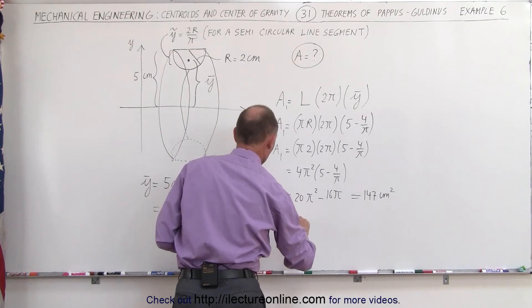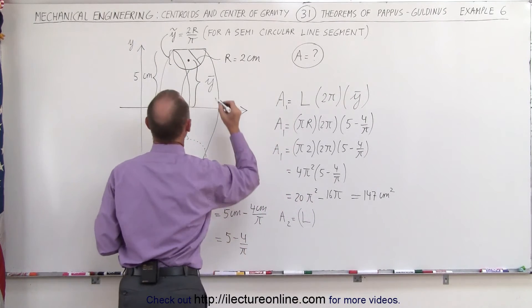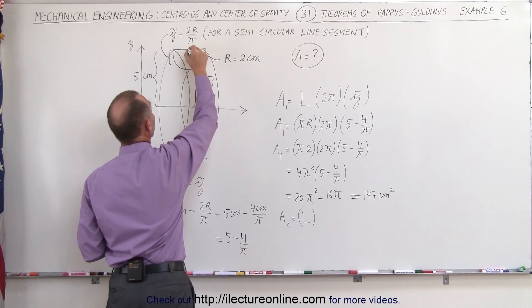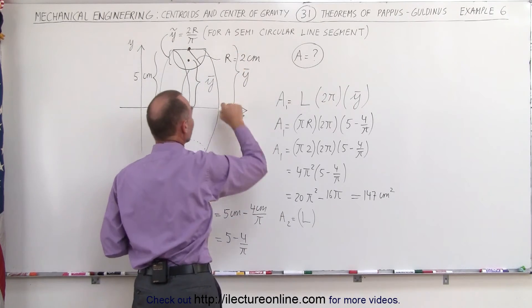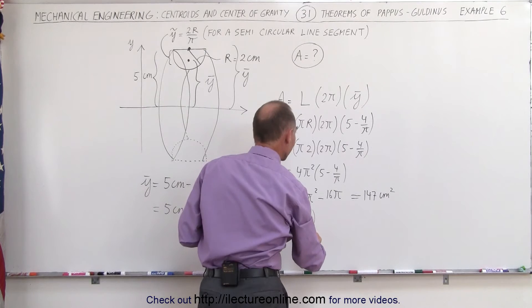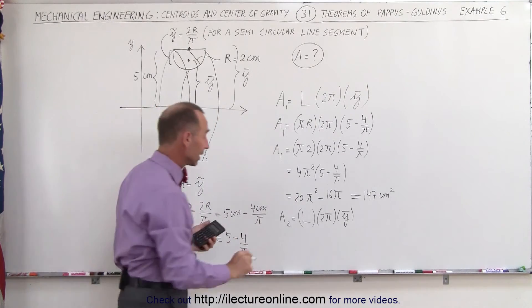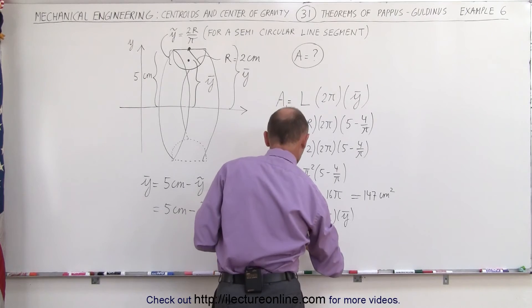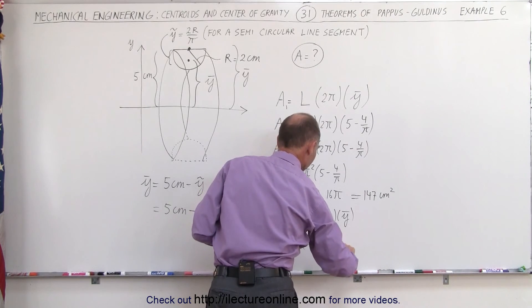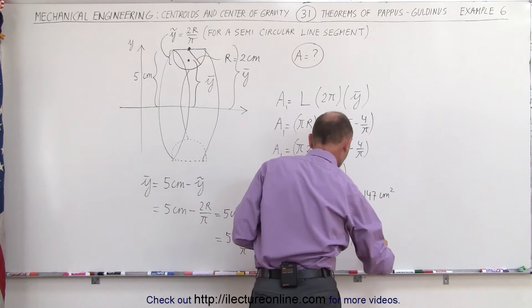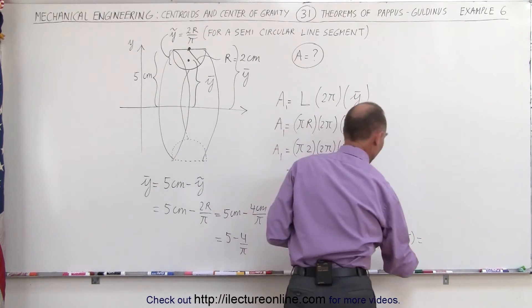For area A2, we find it by taking the length of the flat portion times the distance traveled by its center of mass. The center of mass of the flat portion is at the full 5 centimeters from the x-axis. So A2 equals L times 2π times y-centroid. The length L is twice the radius, so 2 times 2 centimeters. Plugging in: 4 times 2π times 5 centimeters gives 8 times 5, which is 40π.